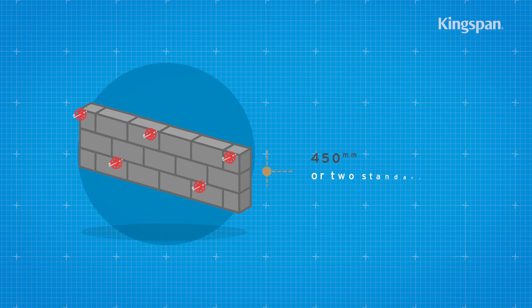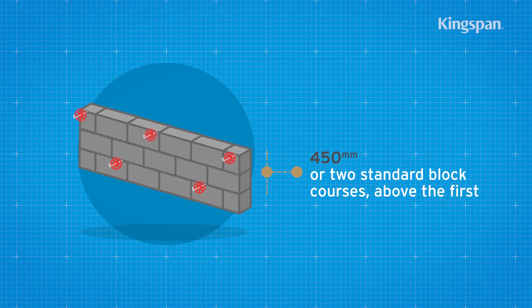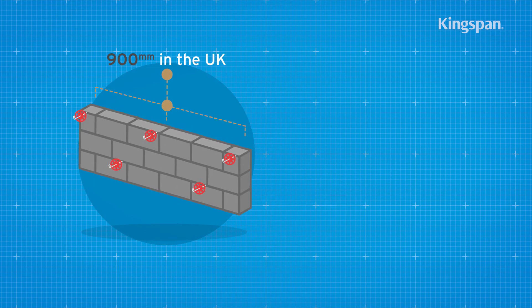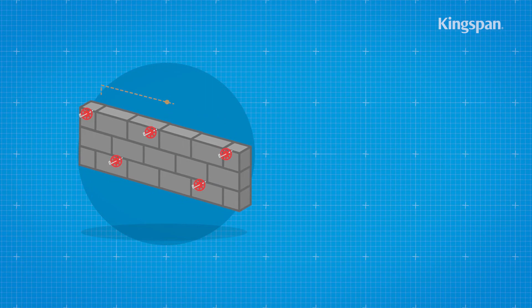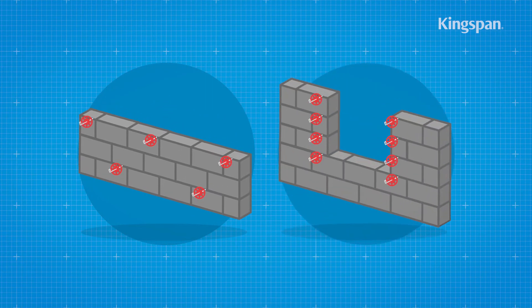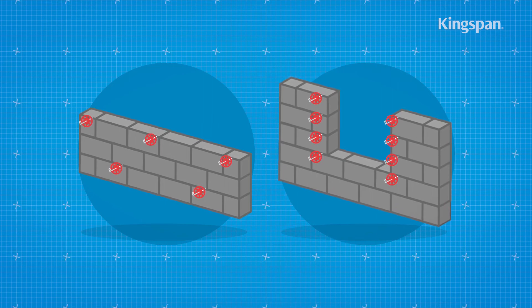Continue constructing the inner leaf up to the next wall tie course. The next course of wall ties is positioned at regular horizontal centers. Extra wall ties should be positioned at jambs for all openings.